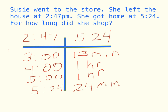However, we're not done. Now we need to add up the hours: 1 plus 1 gives me 2 hours. But then I also need to add up 13 and 24. 4 plus 3 is 7, and 2 plus 1 is 3. So it's 2 hours and 37 minutes.